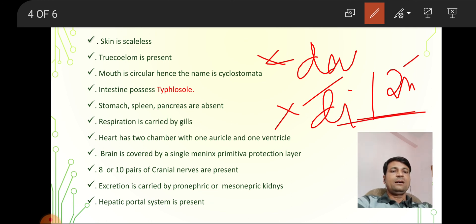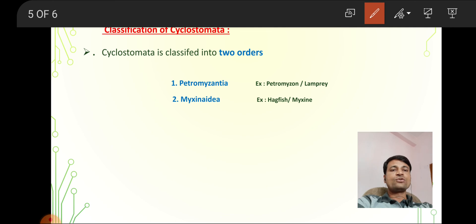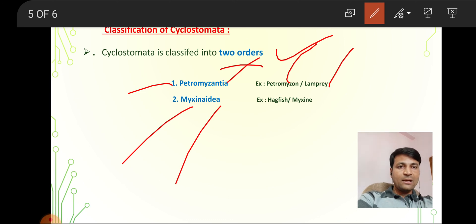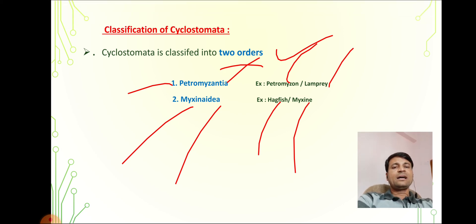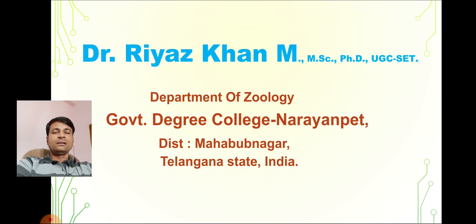Now, their classification: Cyclostomata is classified into two orders. One is Petromyzontia — example: Petromyzon and lamprey. The second is Myxinidae — example: hagfish and Myxine, also called slime eel. These are the Cyclostomata general characters and their classifications. The characters of Petromyzontia and Myxinidae will be discussed in the next class. Thank you.